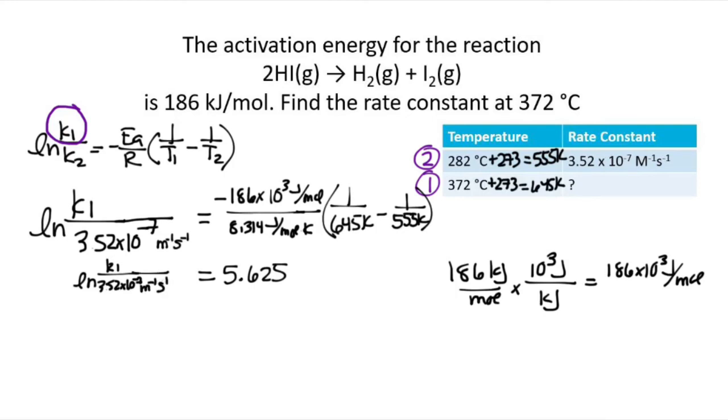To get rid of the LNs, we're going to do E to the both sides. And so that will give us K1 divided by 3.52 times 10 to the minus 7. And E to the 5.625, if you put that in your calculator, is 2.77. We're going to keep some extra significant figures there until we get to the end.